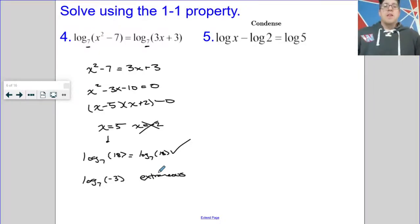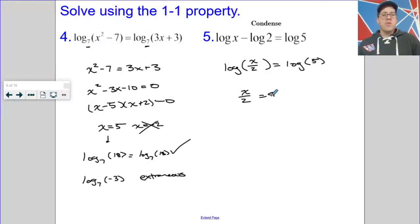Okay, now this only works if you have 1 log equaling 1 log. So we may need to condense. When we have subtraction, we can condense to the common log of x over 2 equals the common log of 5. So that tells me that x over 2 equals 5 or x equals 10.